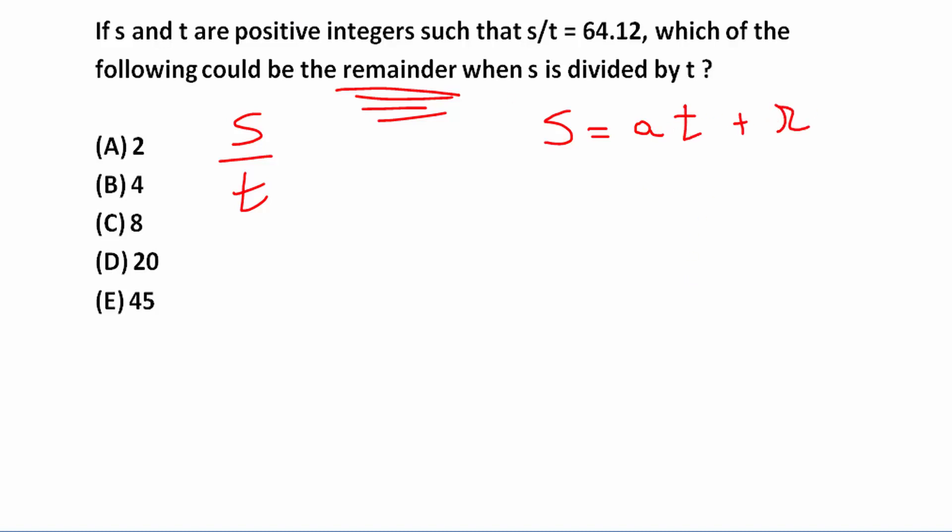So A here is a constant integer, and R is an integer and it is the remainder. This form is very important to know.